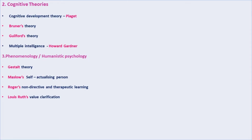Cognitive theories include: cognitive development theory (Piaget), Brunner's theory, Guilford's theory, multiple intelligence (Howard Gardner), phenomenology, humanistic psychology, Gestalt theory, Maslow's self-actualizing person, Roger's non-directive and therapeutic learning, and Leu's Rose value clarification.